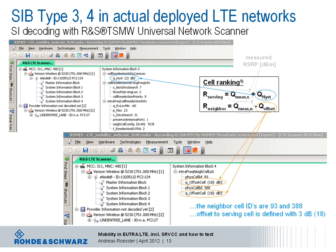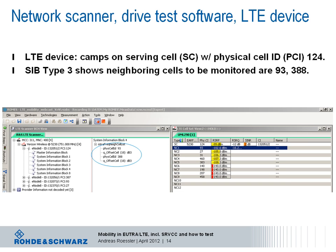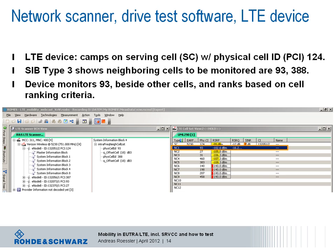This screenshot combines the view of the LTE system information demodulator on the left-hand side with what an actual real LTE device registered to the LTE network and controlled by ROMES drive test software is seeing. The device has serving cell identity 124. SIB type 3 of that cell provides the device with information on which neighboring cells to monitor — exactly the same example as before, cells 93 and 388. The device monitors these and many other cells with pretty low reception levels and ranks them based on the discussed ranking criteria.